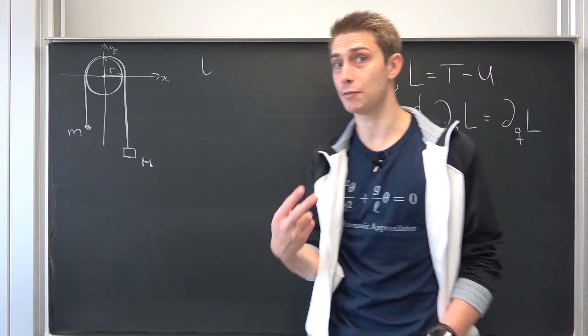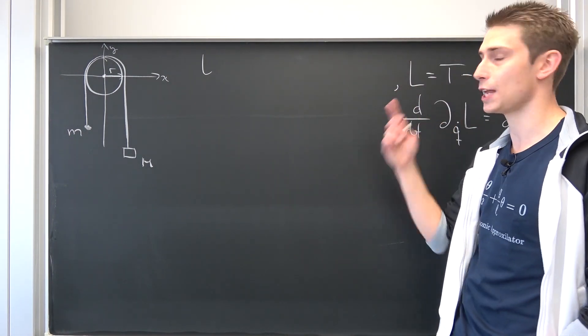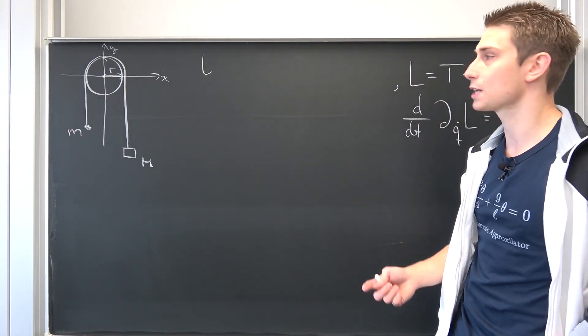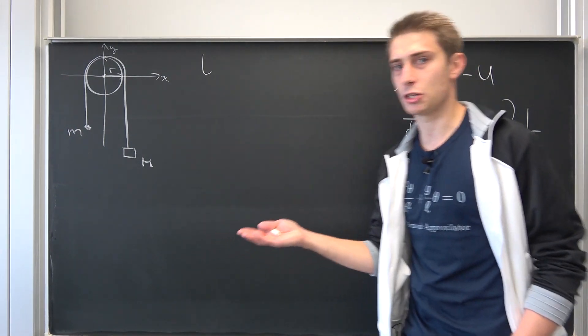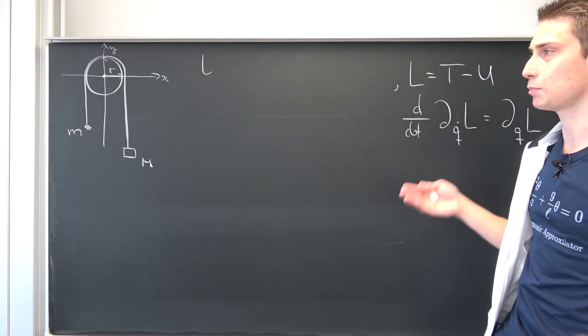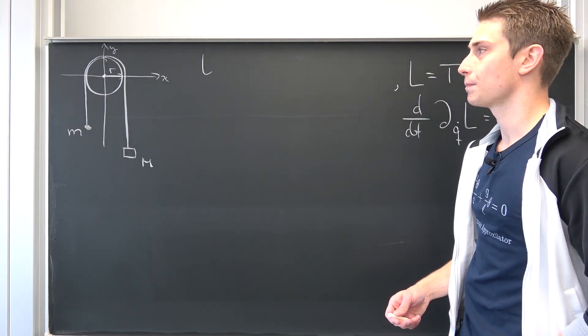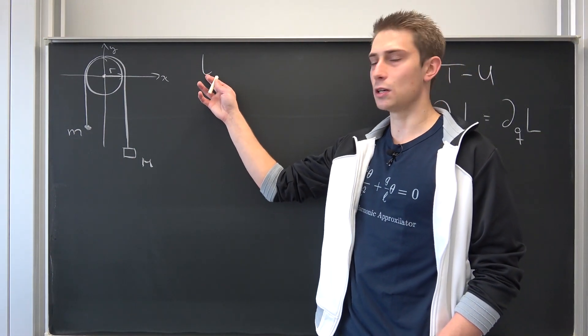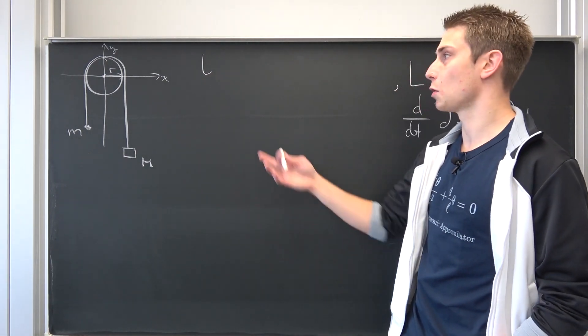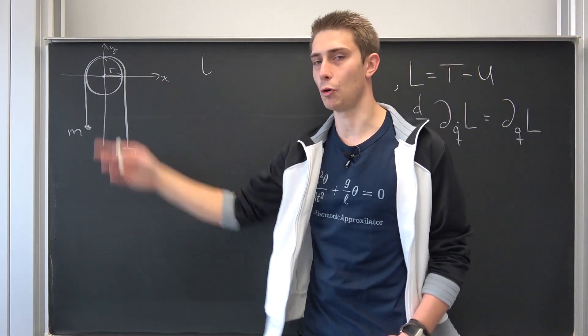We need to find out the kinetic energy. So we need to know where our masses are at all times. This time we have two masses, meaning we have two kinetic and two potential energies. Do not forget that. And we can just do the superposition of those kinetic and potential energies to get our total kinetic and total potential energies.